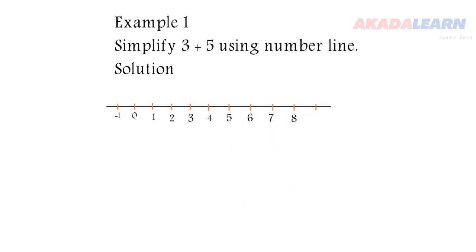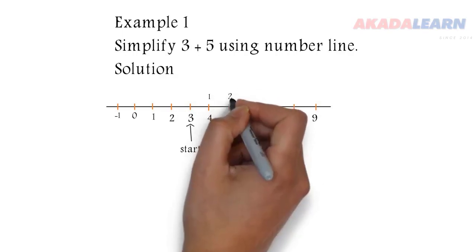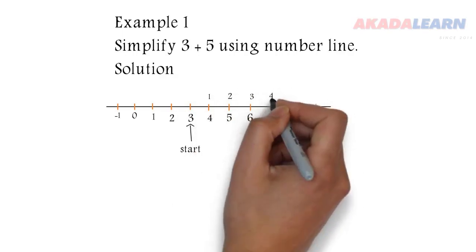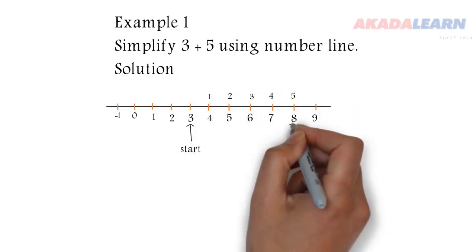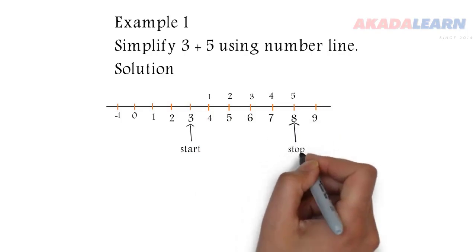The first number is 3, so we start from 3 and we go to the right hand side five times: one, two, three, four, five. It means we are stopping on 8. So remember, to add you go to the right hand side.